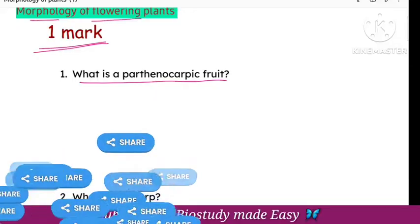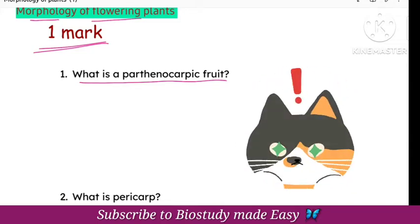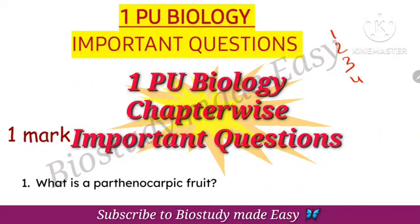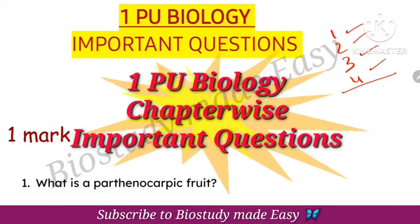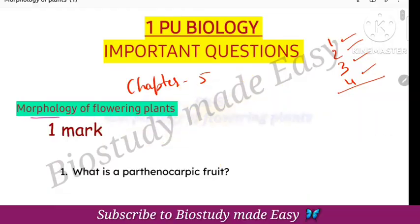If you have the previous question papers and model paper, I will include all these questions. I am going to cover these questions — there are fixed important questions and repeated questions. Welcome back to another video from BioStudy Made Easy. I will upload questions chapter-wise for chapters 1, 2, 3, and 4, that is Animal Kingdom. Next, chapter number 5 — Morphology of Flowering Plants.